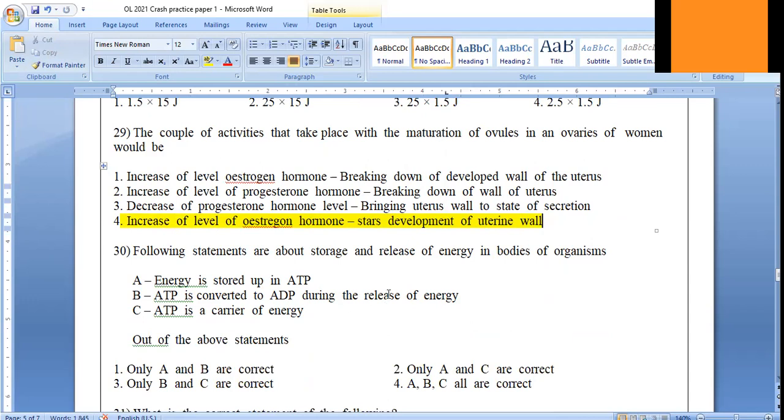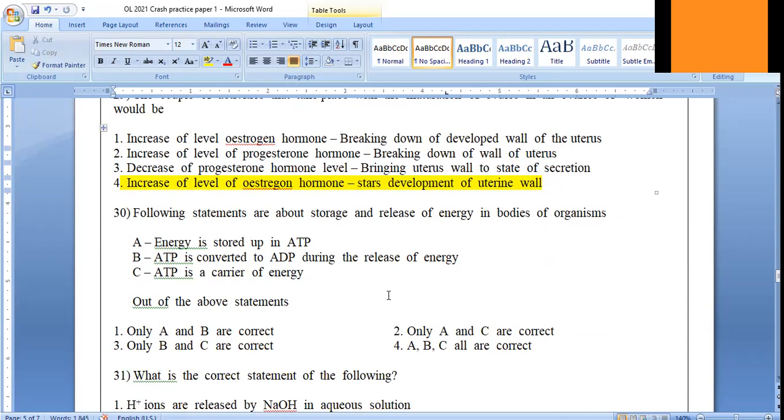Finally, question number 30, it is regarding ATP. All the three statements given here regarding ATP are correct, so we are choosing the fourth answer. That is the discussion of 30 MCQs, 21st to 30th. Inshallah, the last video I will explain you regarding the questions from 31 to 40. Thank you.